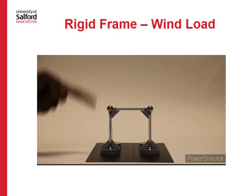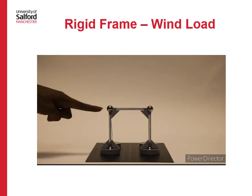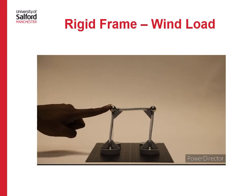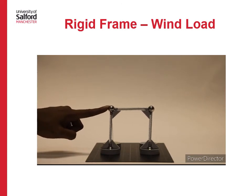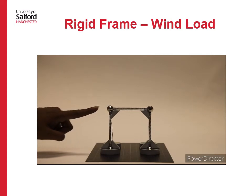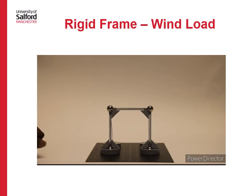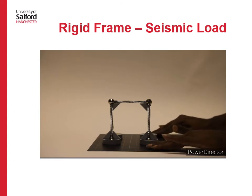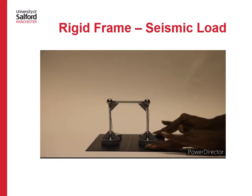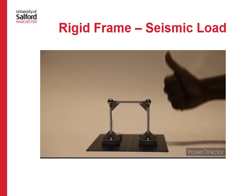Let us now study how the rigid moment-resisting frame behaves when a wind load is applied laterally. You can see that moments are transferred from one member to another through the joints, but overall the structure remains stable. Finally, when earthquake loading is simulated by moving the base plate, although there are slight deflections, the structure remains stable.